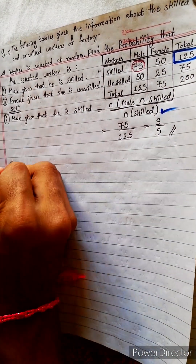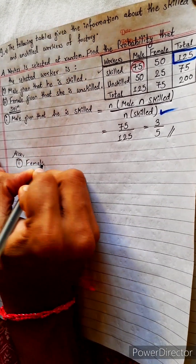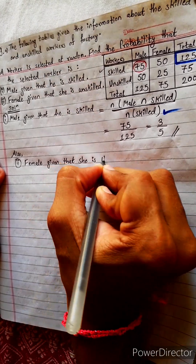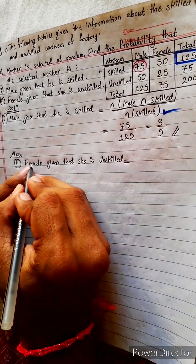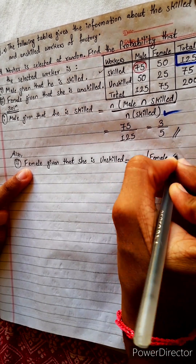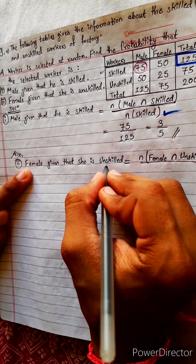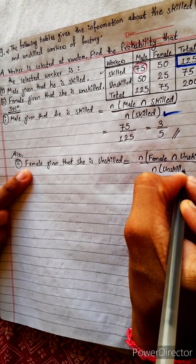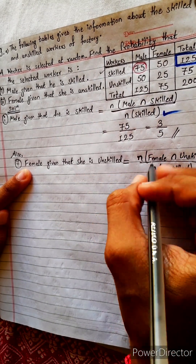In question 2, what is it asking? Female given that she is unskilled. This equals: the number of females who are female also and unskilled also — intersection of female and unskilled — divided by the number of unskilled. N means cardinal number, meaning 'number of'. This is: number of (female intersection unskilled) divided by number of unskilled.